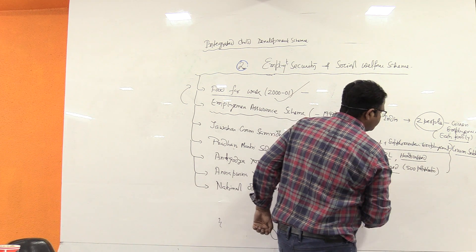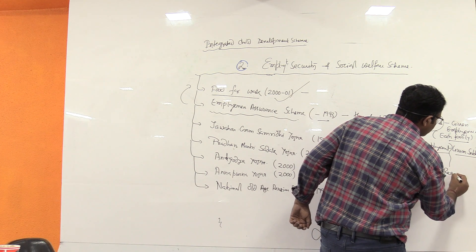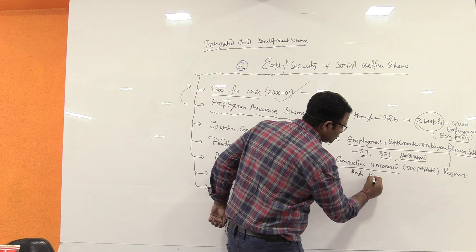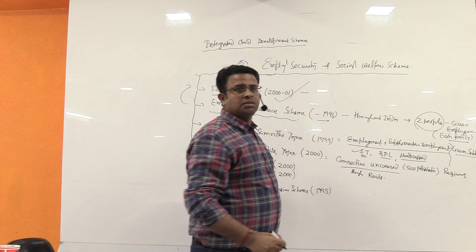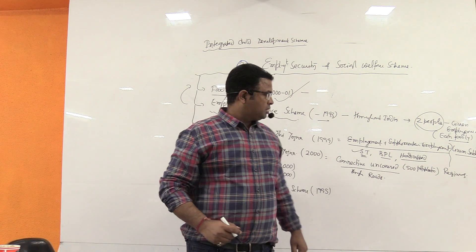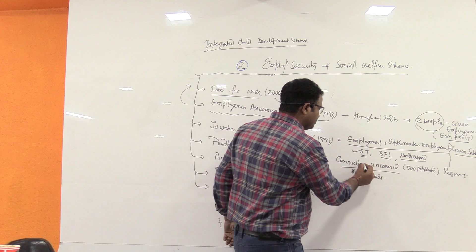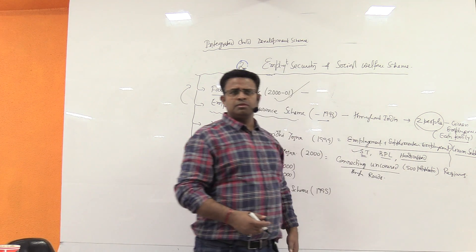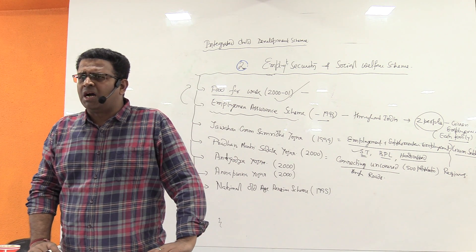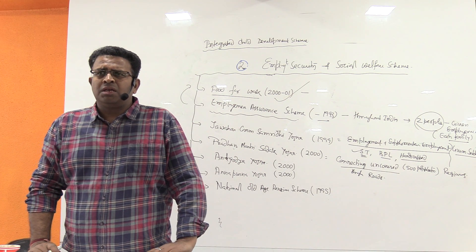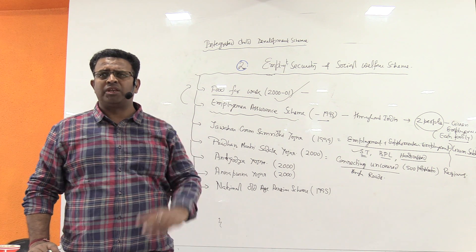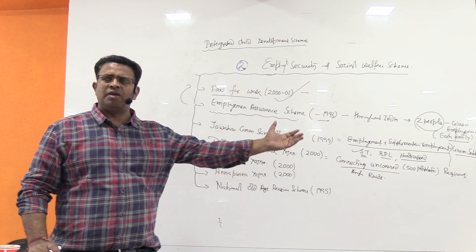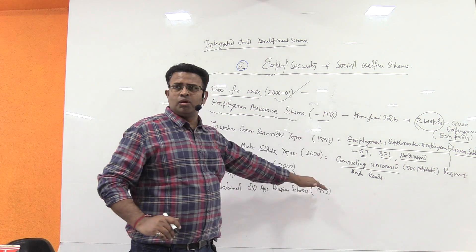Connecting uncovered regions through roads. Uncovered regions that haven't been covered yet, we have to cover. Simple. Pradhan Mantri Gram Sadak Yojana. Gram means villages where the population is less than or equal to 500.